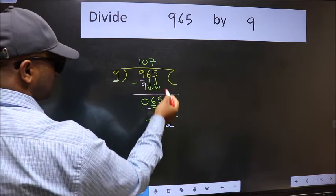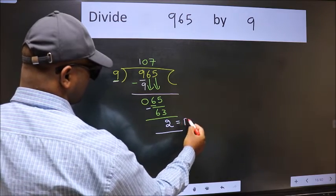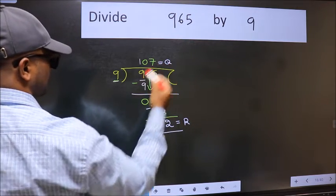No more numbers to bring it down. So we stop here. This is our remainder and this is our quotient.